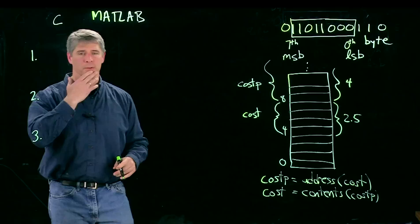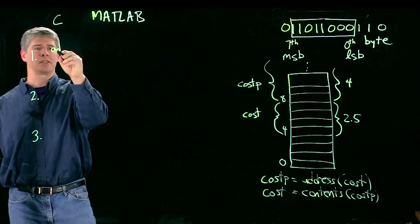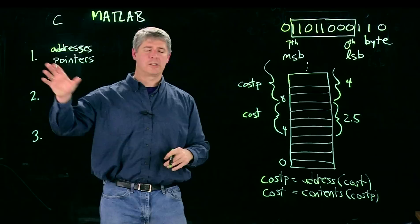So this brings us to our first difference between C and MATLAB. In C, the idea of addresses and pointers, which are actually the same thing, a pointer is just an address of a variable. These are going to be very important concepts in C. In MATLAB, we don't use it.